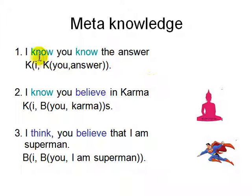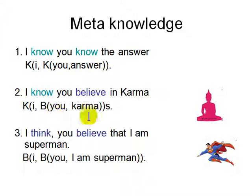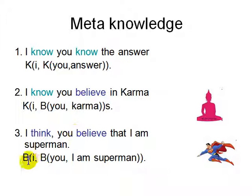And what is meta-knowledge? When you know something about somebody else's knowledge. 'I know you know the answer' — I know this thing, and I think you know the answer. I could be wrong also. 'I know you believe in karma' — I know something about your belief; it may not be true, and your belief is personal to you. 'I think you believe I am superman' — actually when you say 'think' it means I believe, and then you believe that I am superman. So it's like double belief — that's called meta-knowledge. When you think about what another person is thinking, it's very useful in negotiation, contracts, and knowledge sharing.